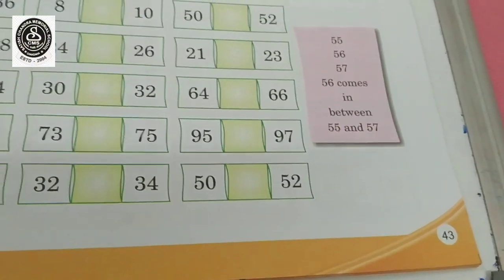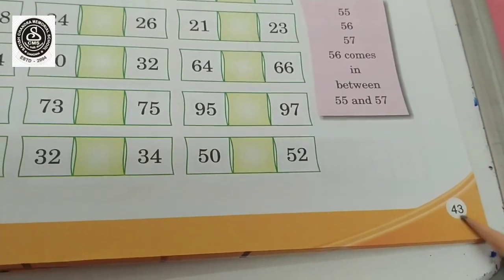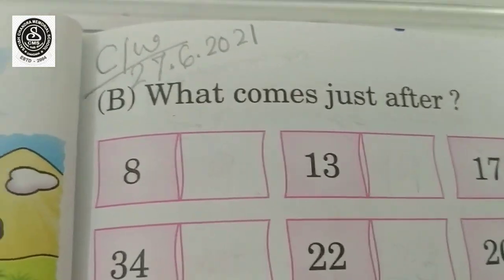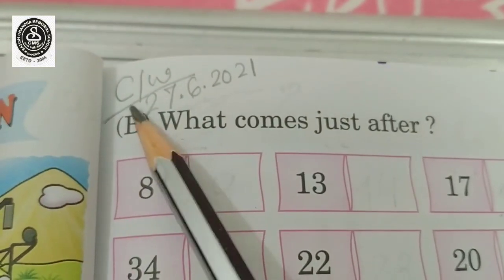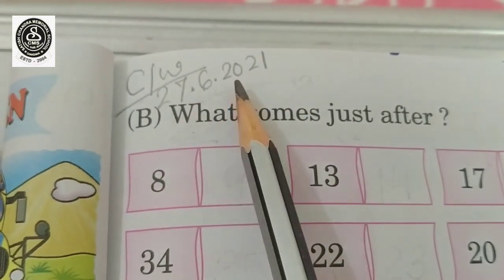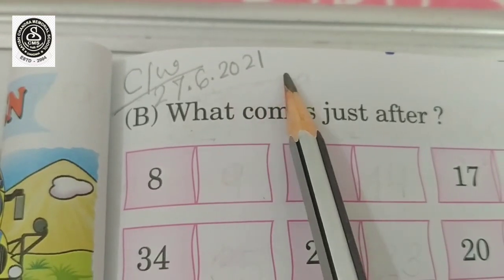Please everybody take your maths book and take out page number 43. Here you can see I have written CW means class work and I have given the date also. 27, 6 and 2021.